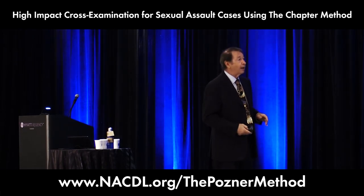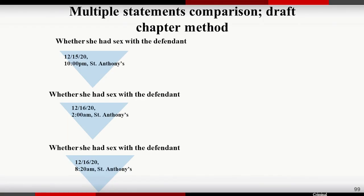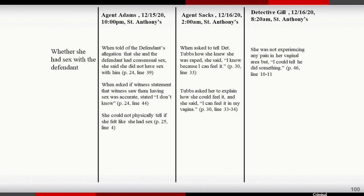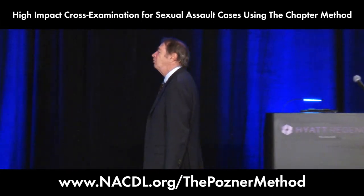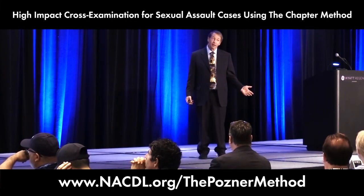What we're trying to say is: whether she had sex with the defendant. Her first statement was on December 15th, her second statement December 16th, then a third statement on December 16th all about whether she even had sex with the defendant because she may have been blacked out. When asked if her statement that she had sex was accurate, she says, 'I don't know.' Then December 16th: 'I could feel it in my vagina.' Then later: 'She was not experiencing any pain, but I could tell that he did something.' It's easier to be bright and gifted in cross when you have good material. The rest is just tap dancing.